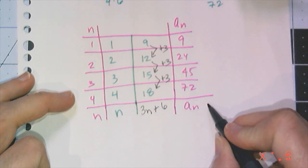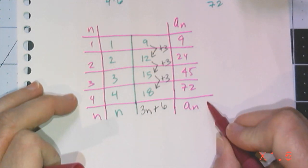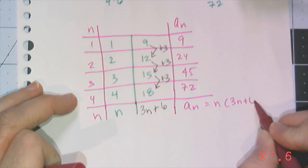And therefore, the answer that I am looking for is a sub n equals n times 3n plus 6.